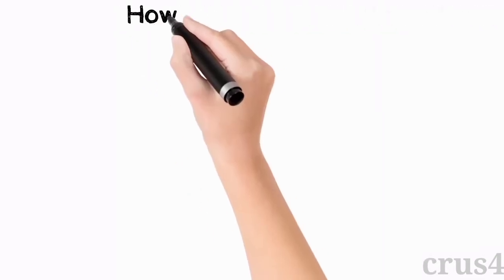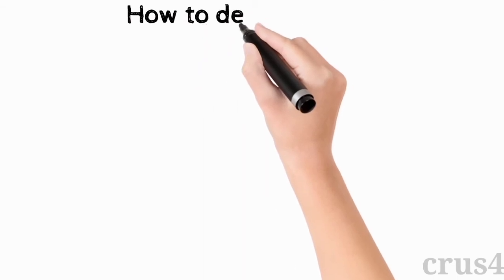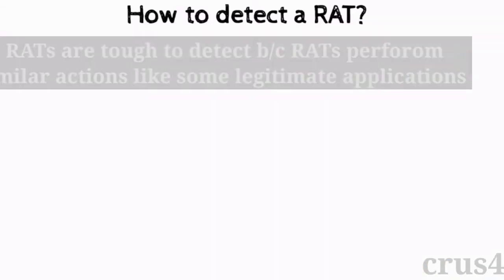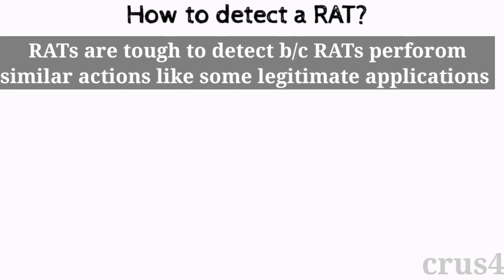Now the question is: how can you detect a RAT on your computer? RATs are particularly tough to detect as they generally do not appear in lists of running programs. Furthermore, the actions performed by RATs are highly similar to some legitimate applications like VMware. But still there are some signs by which you can know that your computer is affected by a RAT.